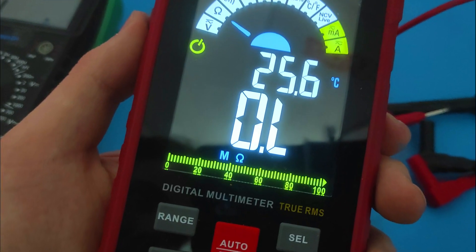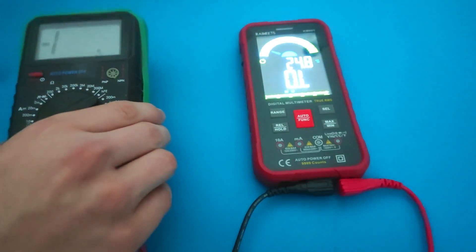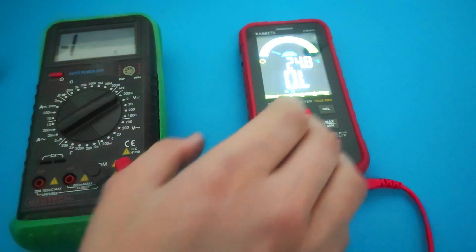What does OL mean on a multimeter? OL means overload on a multimeter when testing for voltage or resistance.